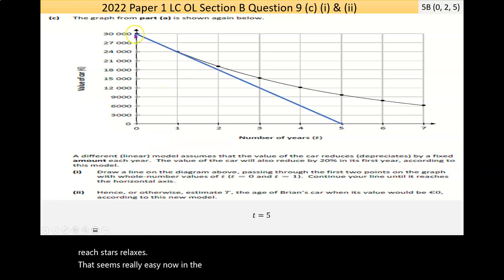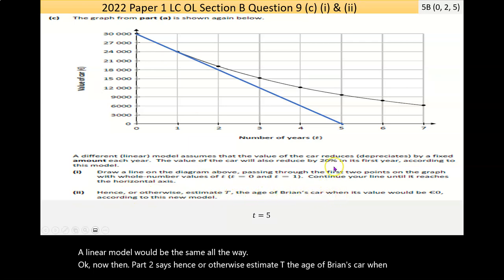In the answer in the back, I've went through this point and this point, and then it's continued on. A linear model would be the same all the way along. Then part 2 says, hence or otherwise, estimate T, the age of Brian's car when its value would be 0.